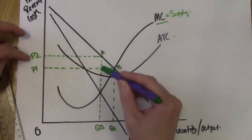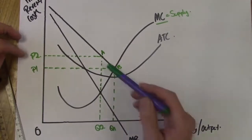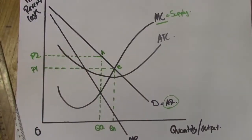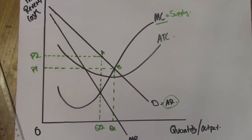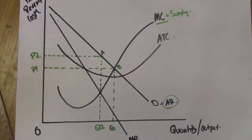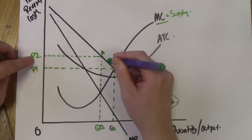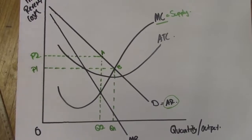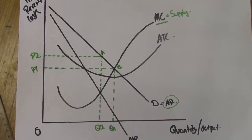So Q1 is the allocatively efficient level of output and Q2 is the profit maximizing level of output. If the firm is a profit maximizer, they charge at P2, which is higher than the allocatively efficient price P1. By charging P2, this creates an area of deadweight loss — an area of welfare loss — and some people in society cannot buy that good because the price is too high. There's a contraction along the demand curve from B to A, decreasing demand.